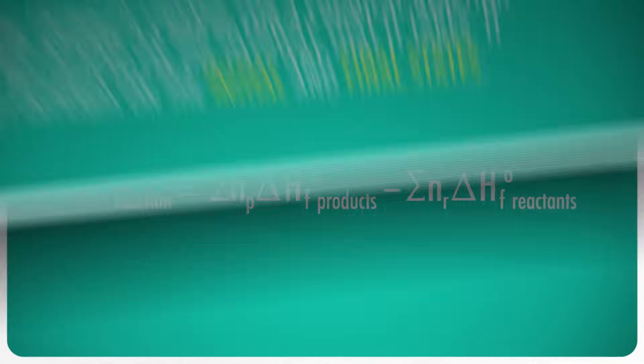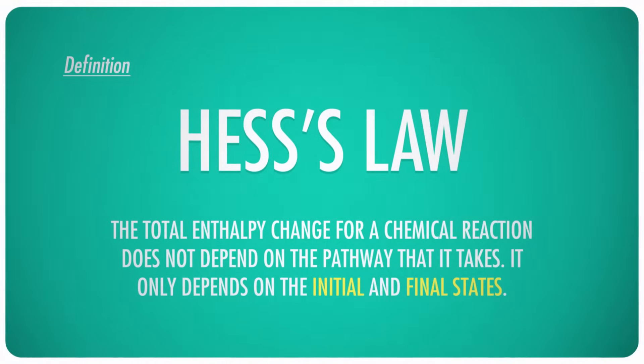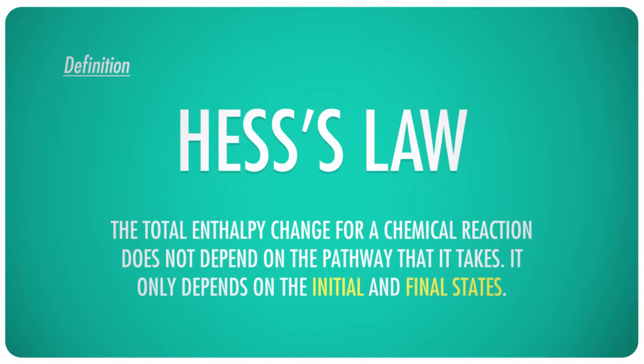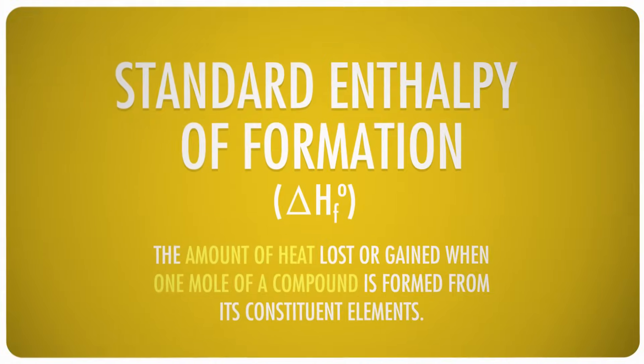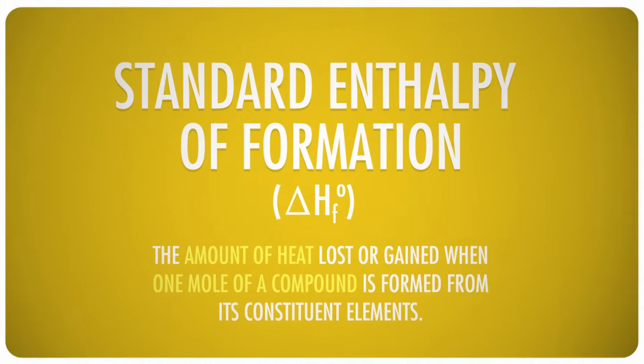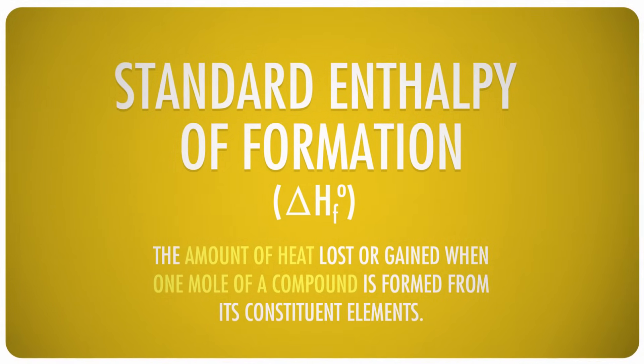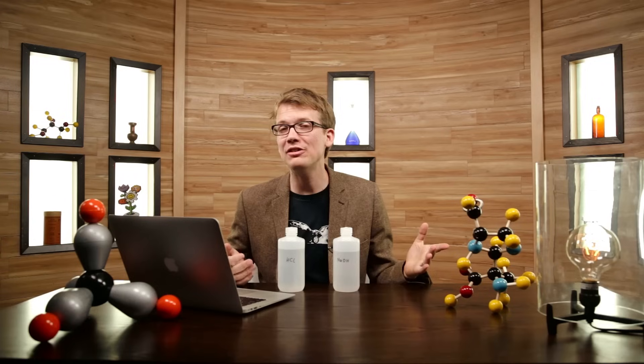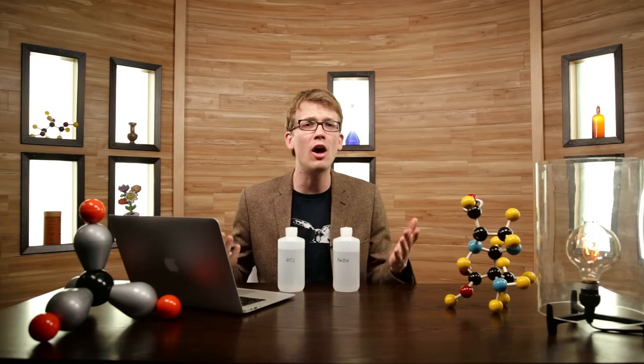One of the ways we can calculate the change in enthalpy of a system is with Hess's Law, which, you'll recall, states that the total enthalpy change for a chemical reaction doesn't depend on what pathway it takes, but only on its initial and final states. It's often expressed in terms of standard enthalpies of formation, that is, the amount of heat lost or gained when one mole of a compound is formed from its elements. That's how we figured out exactly how much heat my hand warmers release. But that's not the only way that Hess's Law can be used.